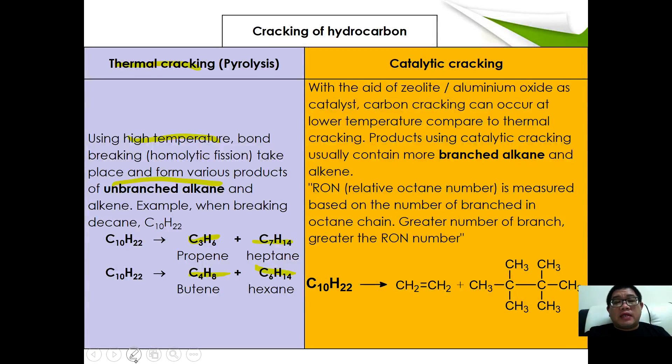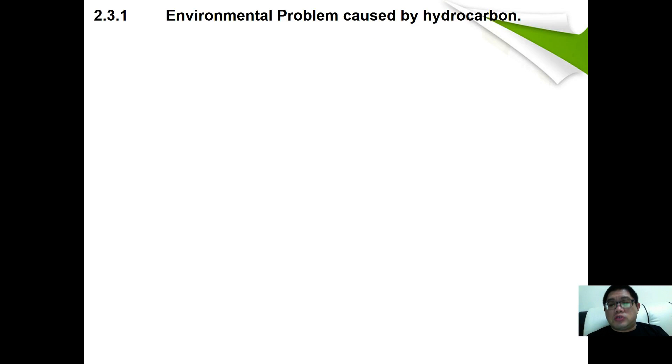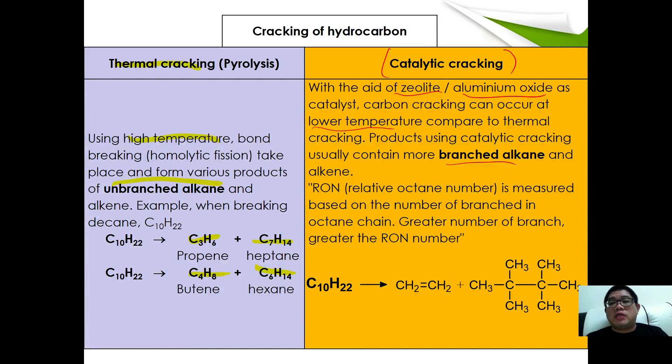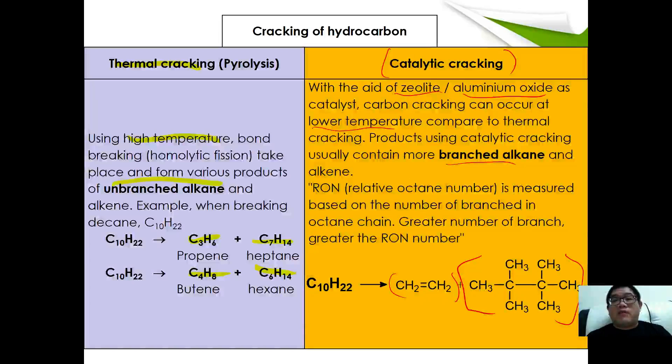The second method is catalytic cracking. Using zeolite or aluminum oxide as a catalyst, carbon cracking can occur at lower temperature compared to thermal cracking. Different from thermal cracking, catalytic cracking produces more branched alkanes. The relative octane number is measured based on the number of branches. This can be achieved by using catalytic cracking to produce greater octane numbers of alkane for different fuels. For example, if you crack C10H22, you might get alkene and highly branched C8H18.